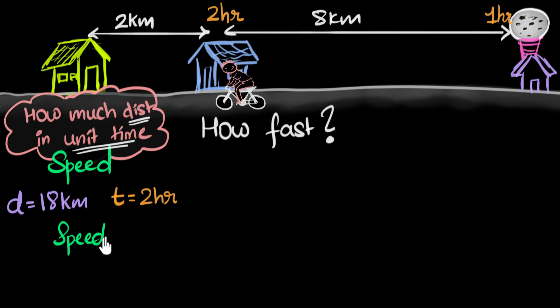So what is his speed? Well, to calculate speed, we need to know how many kilometers he's traveling per hour, in one hour, unit time. So all we have to do is divide 18 kilometers by two hours. And that gives us nine kilometers per hour. And so we'll say Satra's speed was nine kilometers per hour.